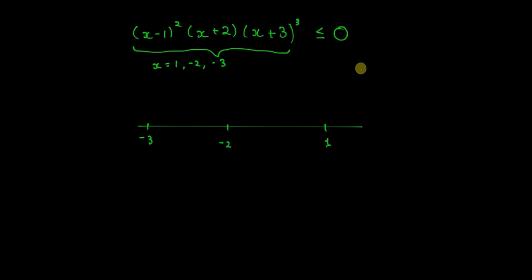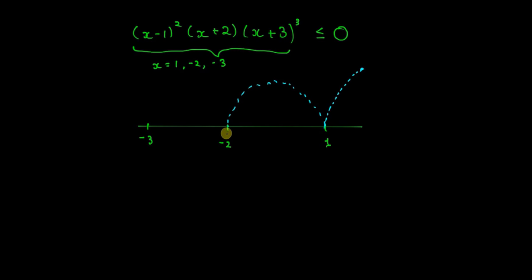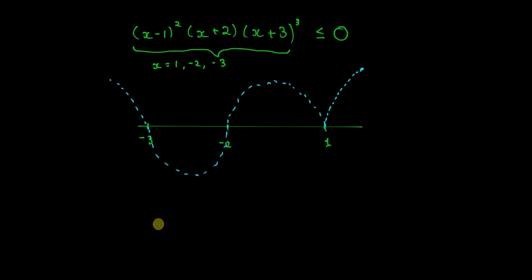Starting from the top right corner: the factor at x equals 1 is squared — an even power — so the wavy curve reaches it but cannot cross it, touching and bouncing back. The factor at x equals minus 2 has an odd power, so the curve crosses it. The factor at x equals minus 3 also has an odd power and the curve crosses it again.